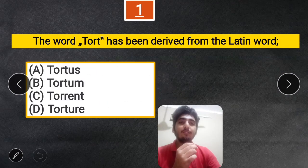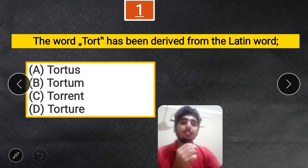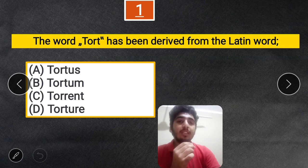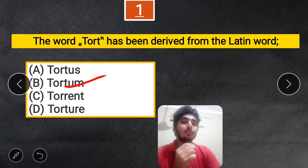Our first question: The word 'Tort' has been derived from the Latin word — A. Tortus, B. Tortum, C. Torrent, D. Torture. The correct answer is B — Tortum.